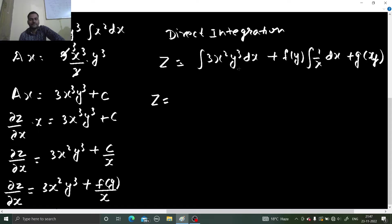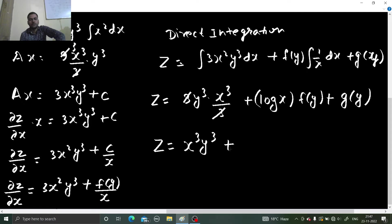Z is integration with respect to x we are doing. 3yq³ can go out, integration of x square is x cube by 3. Integration of 1 by x is log x, so log x times f of y plus this g of y is there. 3 and 3 gets cancelled. So you are finally getting z as x cube yq³ plus f of y times log x plus g of y. I don't think you can get a better answer than this.